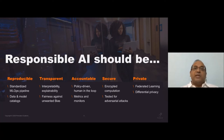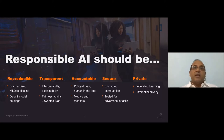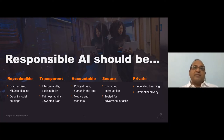One way to bring in reproducibility is to have a standardized machine learning pipeline. A lot of ML models start with very smart data scientists who each have preferences for their own tools — Python, R, NumPy, scikit-learn — and the feature engineering they do may not be uniform. So standardization of the data science pipeline is very important. There are tools like MLflow and Kubeflow that can help you build a standard pipeline.